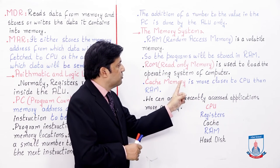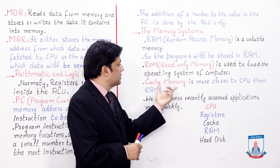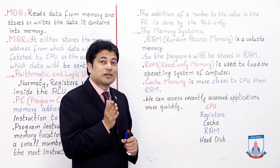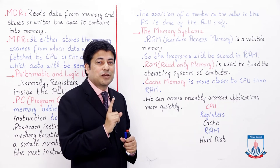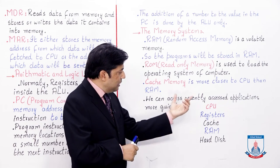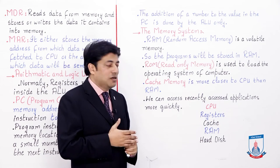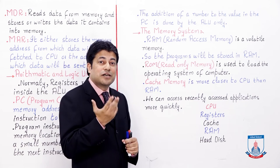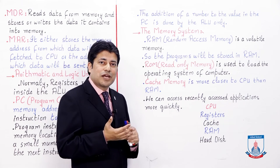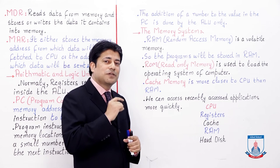Cache memory is closer to the CPU than RAM. We can access recently accessed applications more quickly since cache memory exists between RAM and registers. Cache is closer to the CPU than RAM, but not as close as registers. Registers are the fastest memory, actually inside the CPU. So before RAM, we have cache memory. Registers are in KBs, cache is in MBs, RAM is in GBs, and hard disk is in TBs — though these can differ.